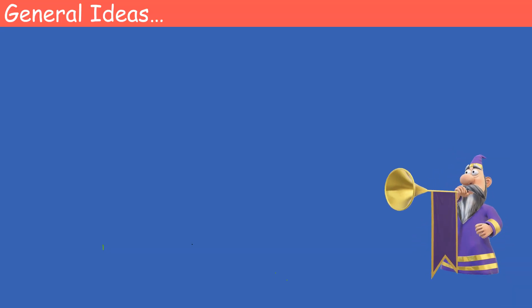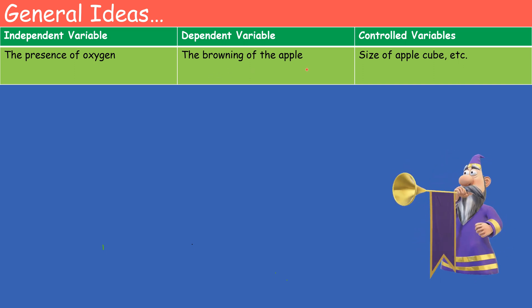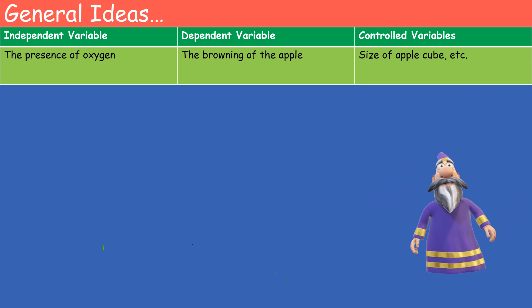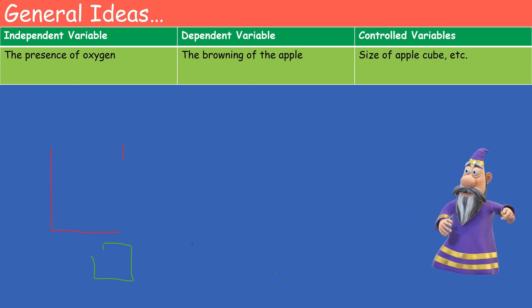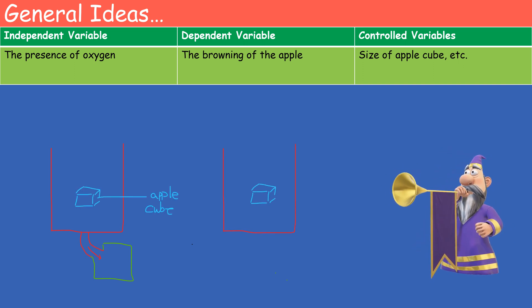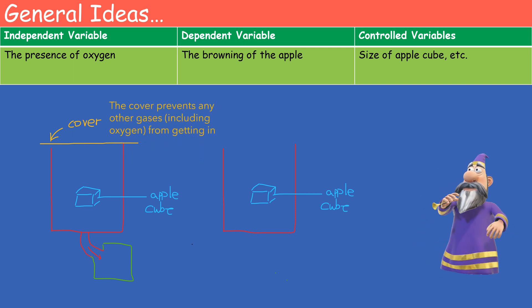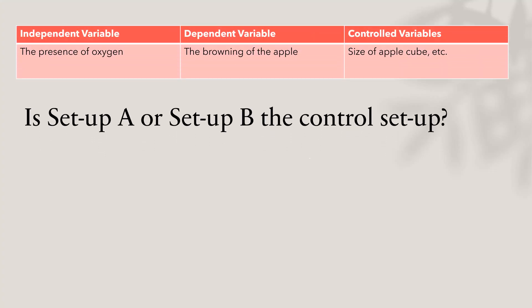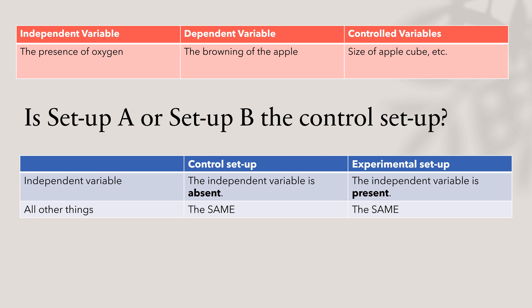In the case of the browning of the apple, the independent variable is the presence of oxygen, the dependent variable is the browning of the apple, and the controlled variables are the sizes of the apple cubes. We can design an experiment to prove our hypothesis that the presence of oxygen causes the browning of the apple by making the following setup. The cover prevents any other gases, including oxygen, from getting into setup A. Inside the covered beaker, there are only gases other than oxygen. Now, knowing the independent, dependent, and controlled variables, we need to see whether setup A or setup B is the controlled setup. A controlled setup ensures the experiment is fair. The controlled setup should be the same as the experimental setup, except that the independent variable is absent. In our case, the presence of oxygen is the independent variable. Therefore, the controlled setup would be the setup without oxygen.